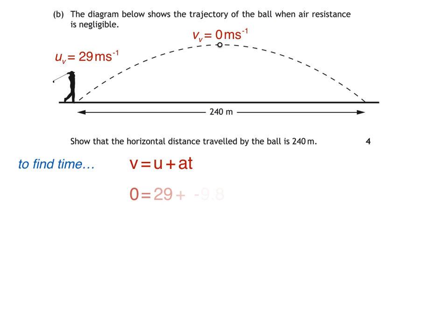Substituting into our equation, we get 0 is equal to 29 plus negative 9.8 times t. If I add 9.8t to both sides, I get 9.8t is equal to 29. Dividing both sides by 9.8 gives me a time of 29 divided by 9.8, which equals 2.96 seconds.